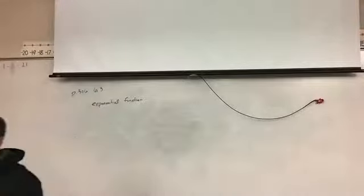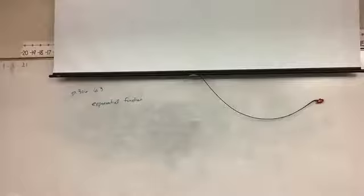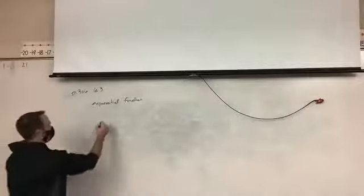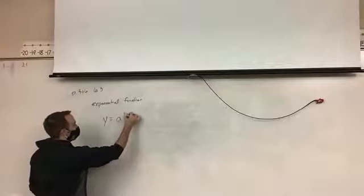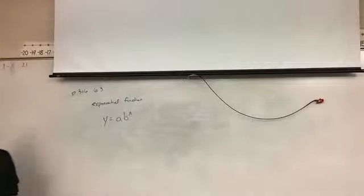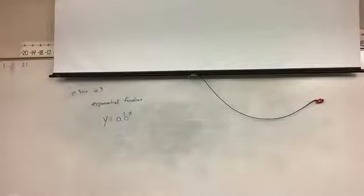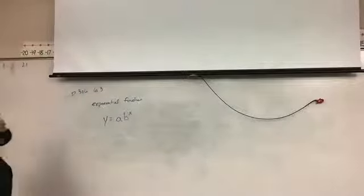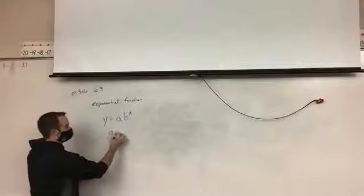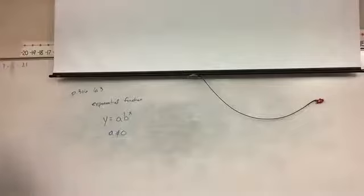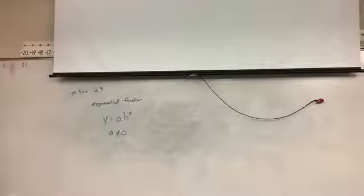Exponential functions have the basic form y = a times b to the x power. A couple things about this: a cannot equal zero, because if a is zero, that just makes the whole thing zero. So a can't be zero.